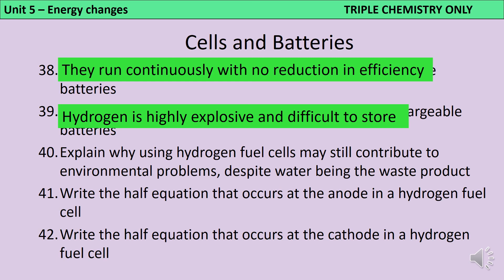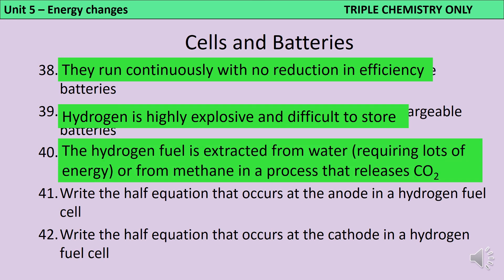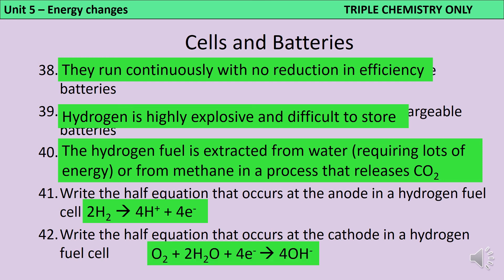Using hydrogen fuel cells may still have negative environmental consequences despite their waste product being water, because that hydrogen has to come from somewhere. It either comes from the electrolysis of water, which is very energy intensive, or from reacting methane with steam, which releases carbon dioxide as a waste product. The half equation that occurs at the anode in a hydrogen fuel cell is two hydrogen molecules splitting apart to make four hydrogen ions and four electrons. And at the cathode we see an oxygen molecule reacting with two water molecules and taking on those four electrons to produce four hydroxide ions.